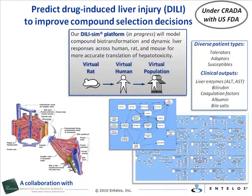Classic clinical markers of hepatocellular death and dysfunction are included in the DILI-SIM platform, including the enzymes ALT and AST, bilirubin and bile salts, coagulation factors, and albumin. Emerging biomarkers will also be included.